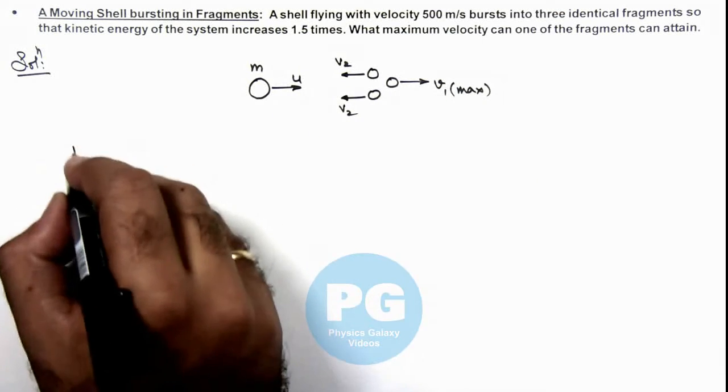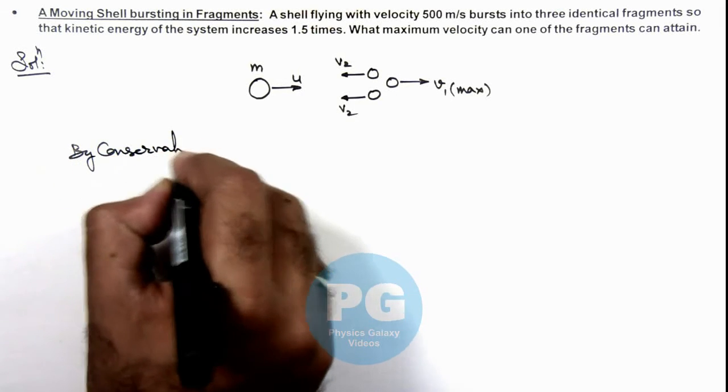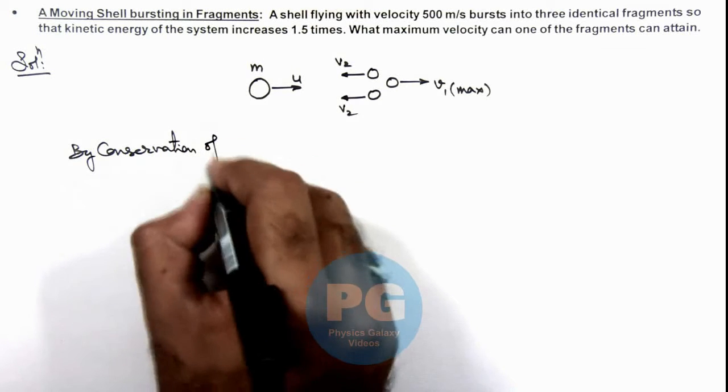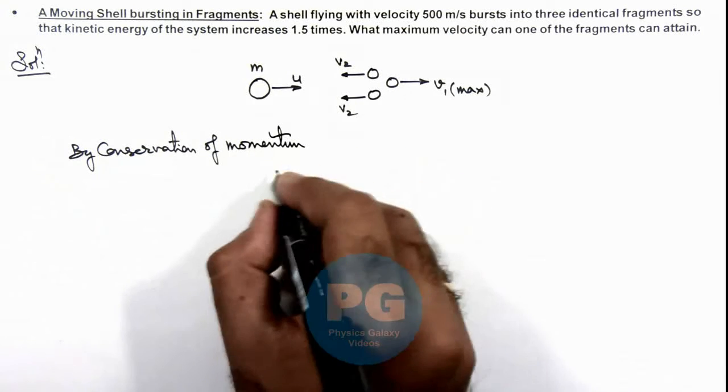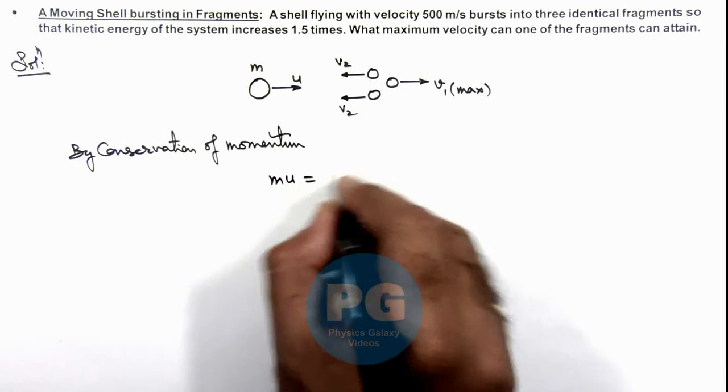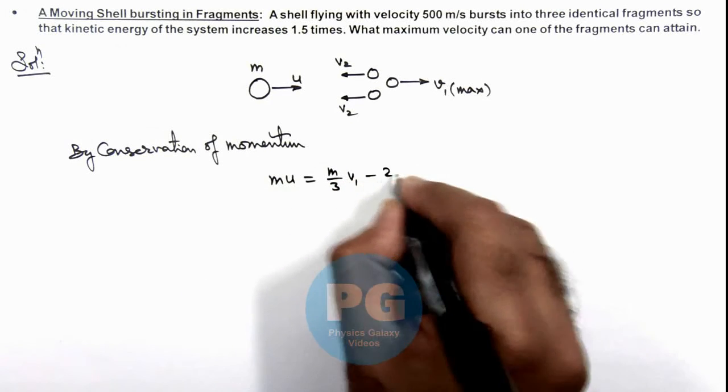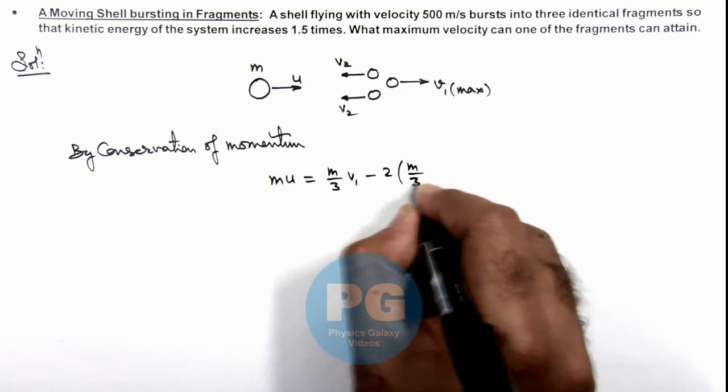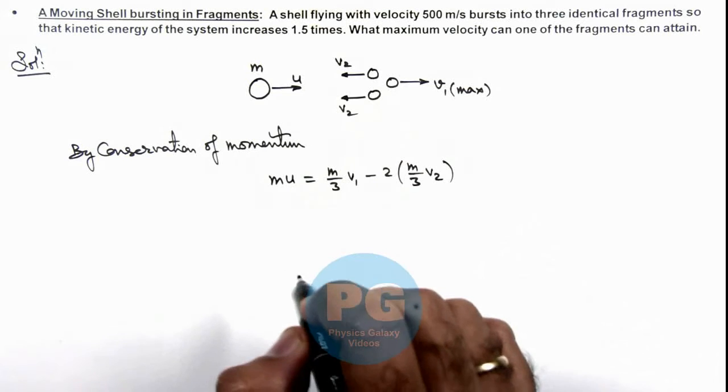So here we can write, by conservation of momentum in this situation, we can write initial momentum was mu which must be equal to m/3·v₁ minus twice of m/3·v₂. Here v₁ would be the maximum velocity attained by one of the fragments.